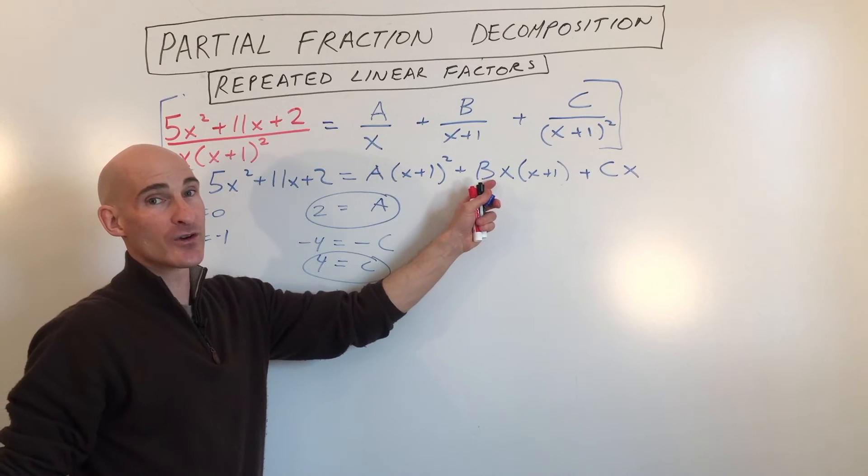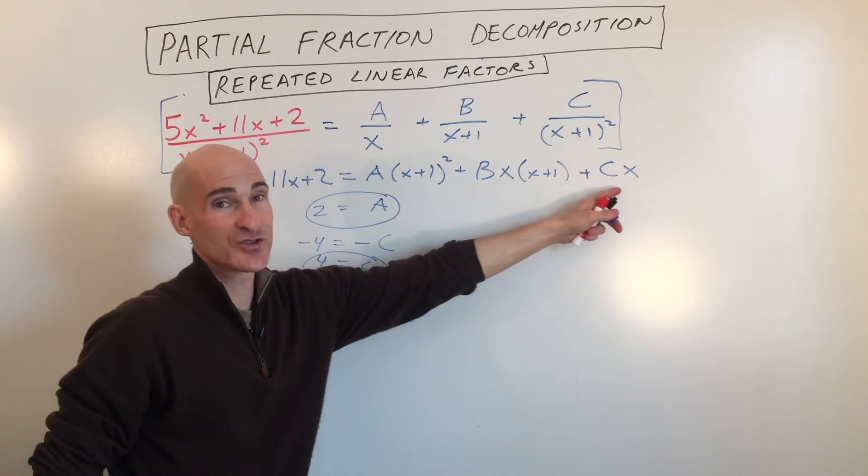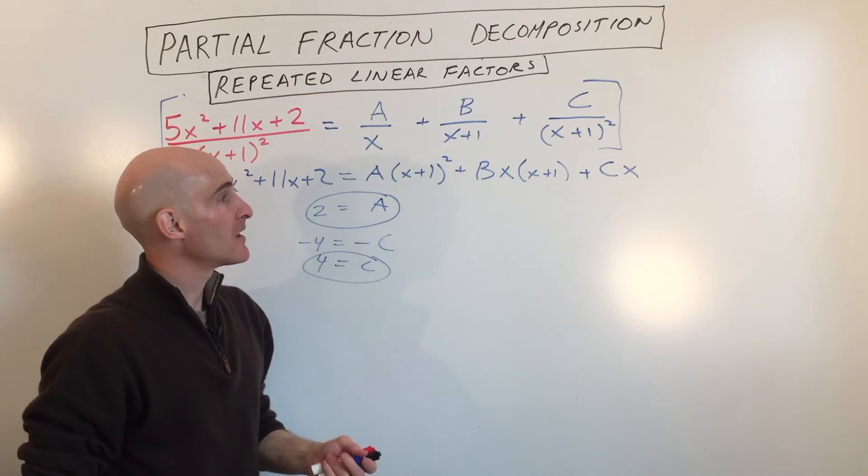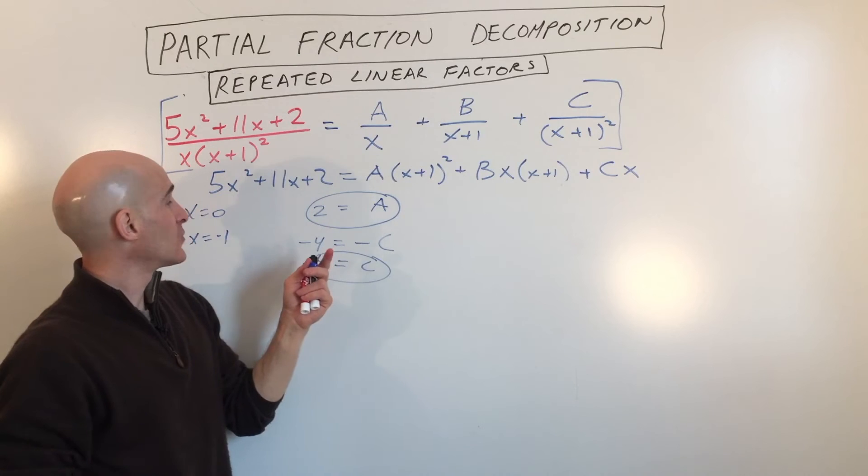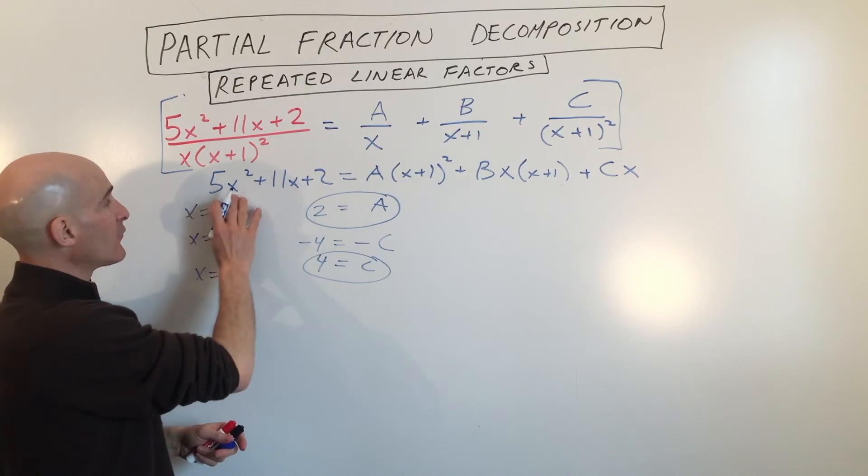Now all we're left to solve for is B. Well, we can't cancel anything out by being strategic by setting x to a certain value to cancel out some of the other terms. So why don't we just let x equal positive 1. Okay, so we're going to say x equals 1. We put in 1 here, we get 11 plus 5 is 16 plus 2 is 18.